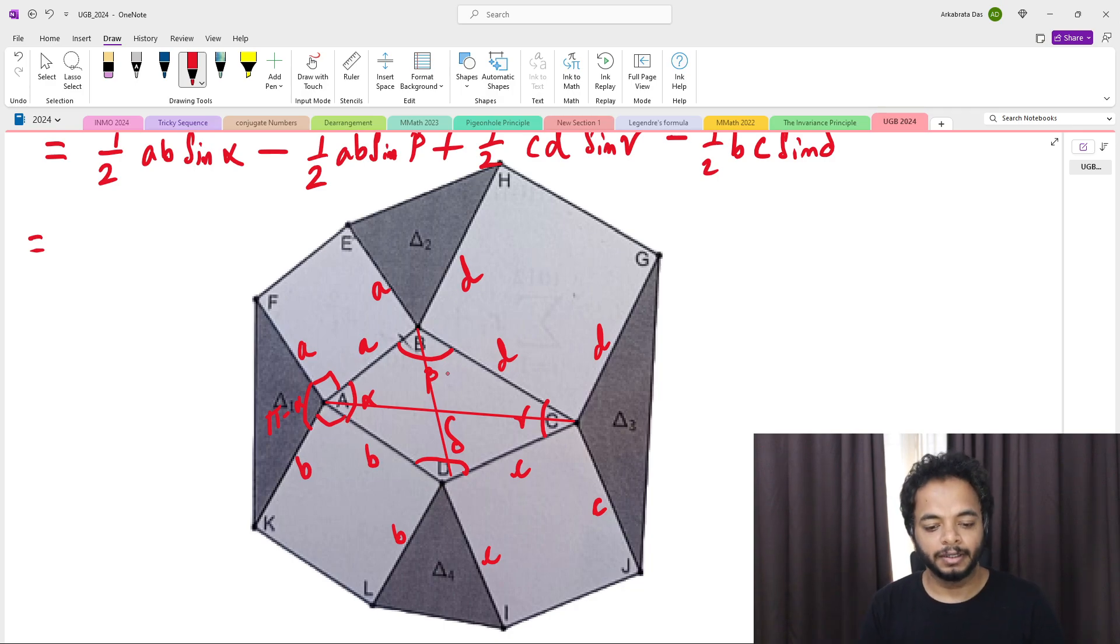Now look at what is half ab sin alpha. That's the half ab sin alpha is the area of triangle ABD, so triangle ABD.